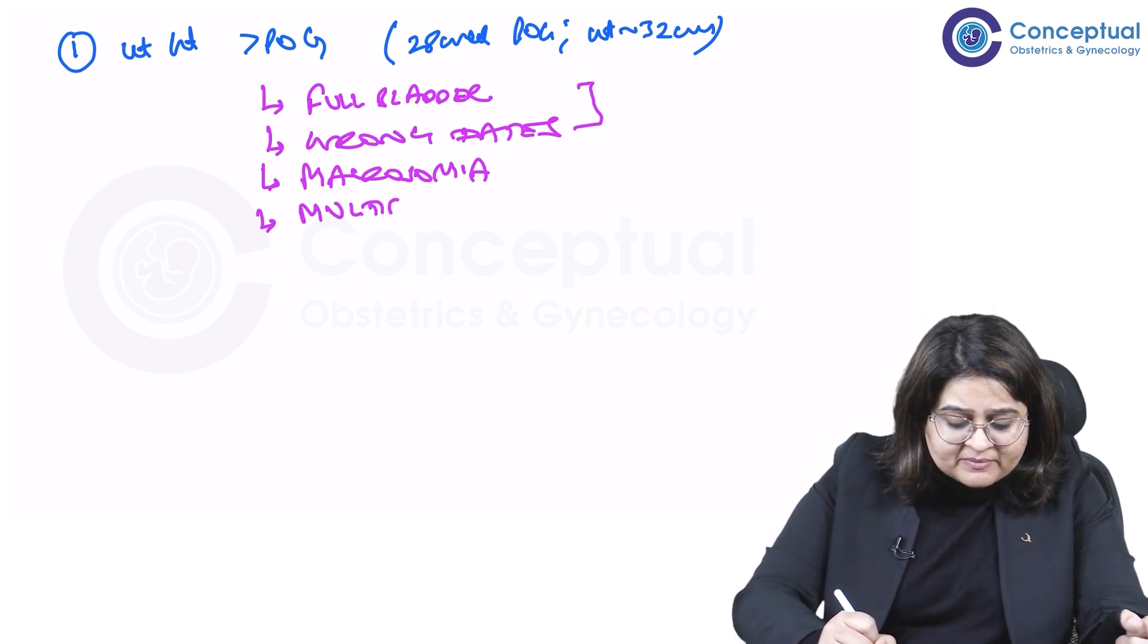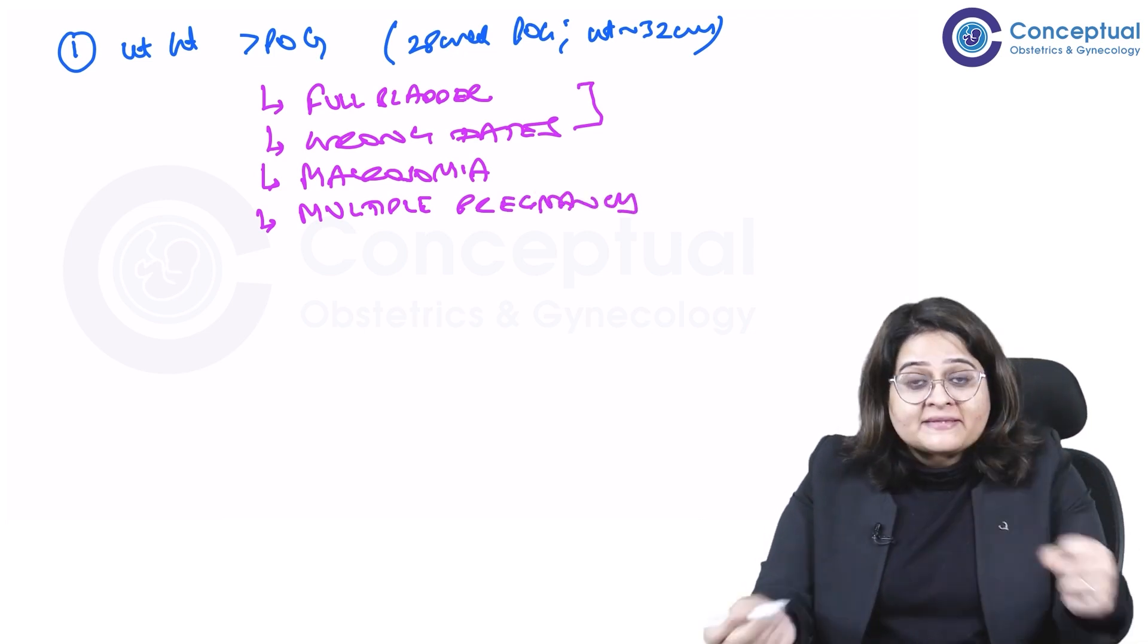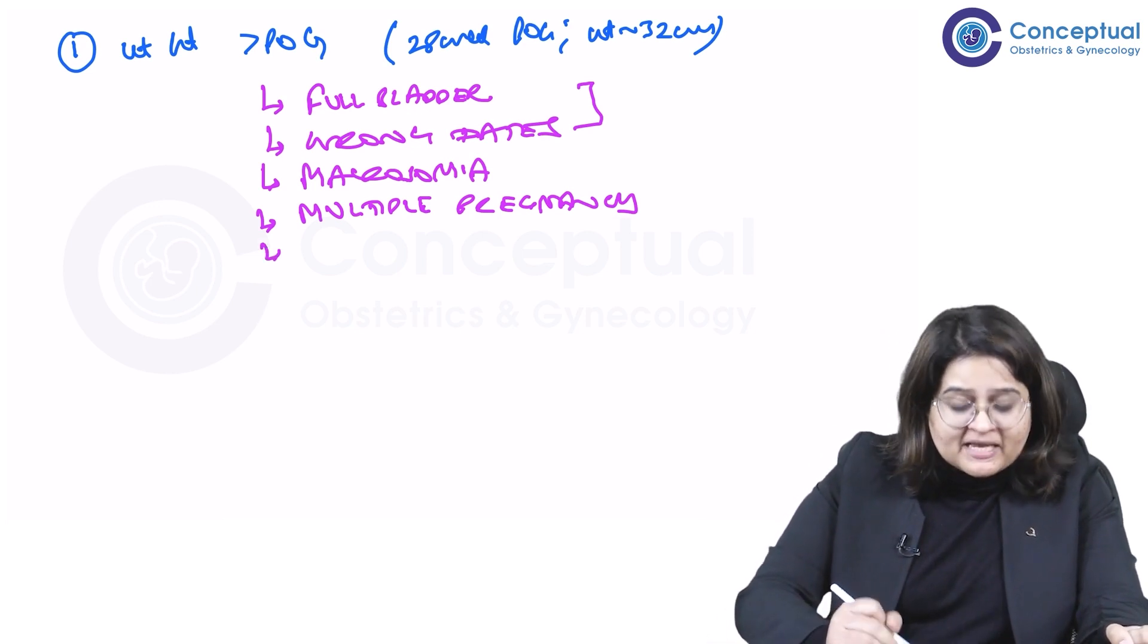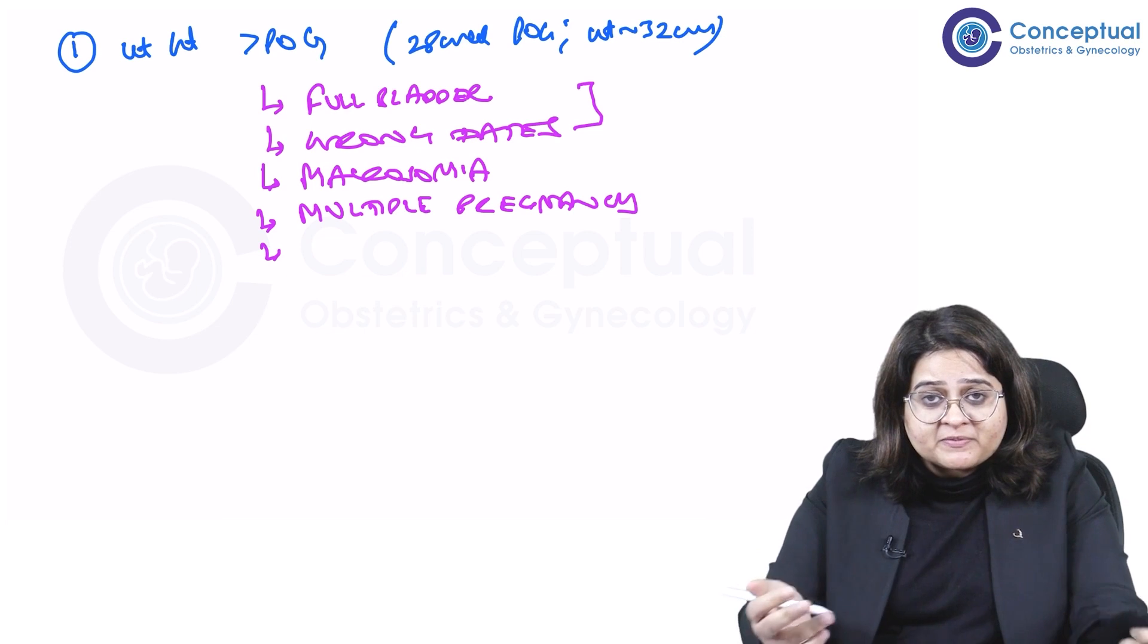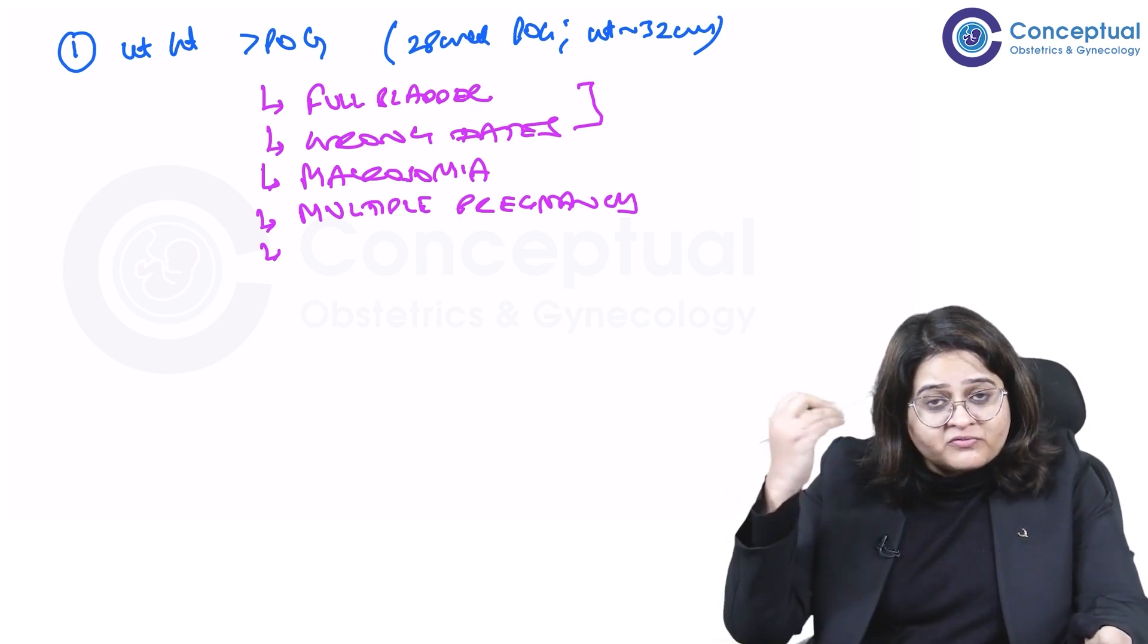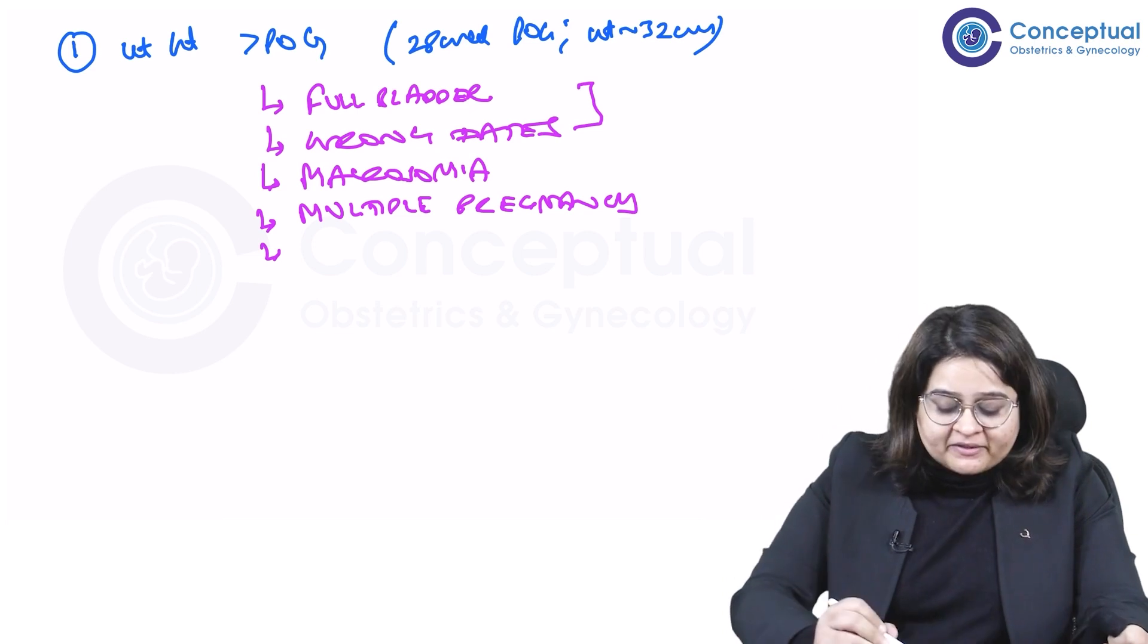What else? There could be multiple pregnancy. Maybe you've missed a twin or a triplet. So recheck her ultrasounds or get another scan done, find out the reason. Maybe there is a multiple pregnancy. Examine her. Maybe you find multiple fetal poles or multiple limbs or maybe two fetal heart rates.